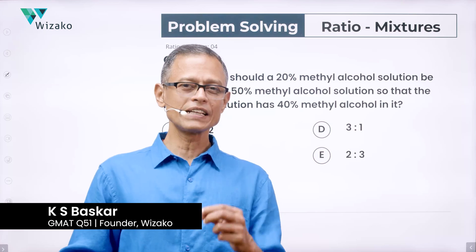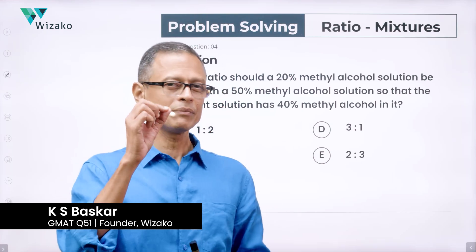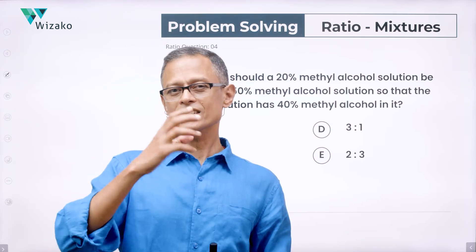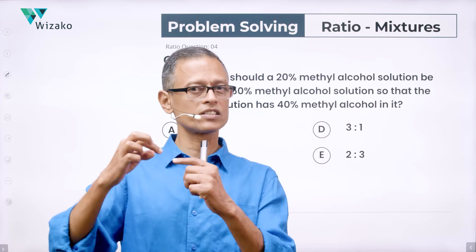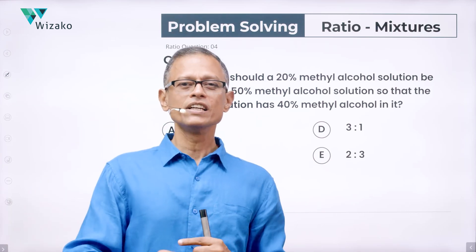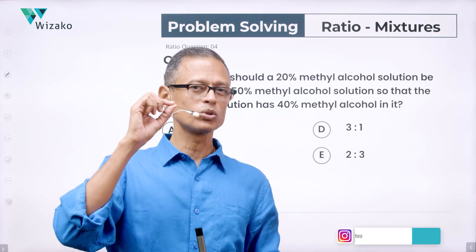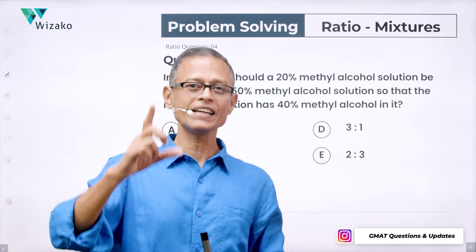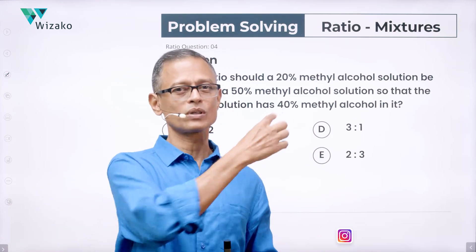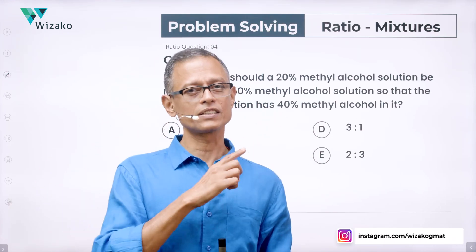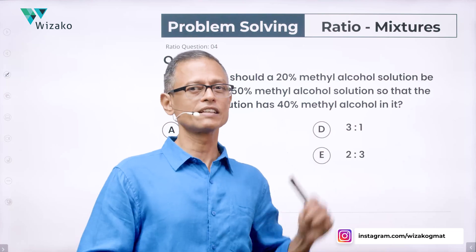Hey everyone, this is a medium difficulty ratio mixtures question. It's a medium difficulty question, but if you understand how to solve it in one of the two methods that we are going to be looking at today, this question should not take you anything more than 15 seconds. I'm not joking, 15 seconds is what you'll take to crack this question with the second method that we'll be learning as part of solving this question.